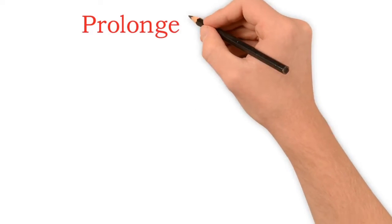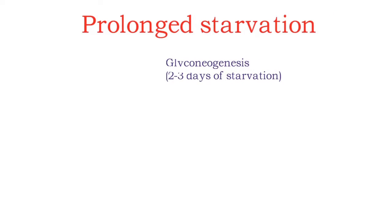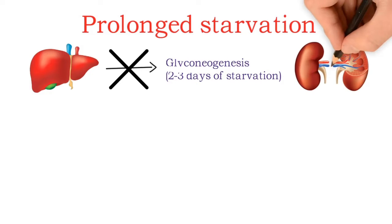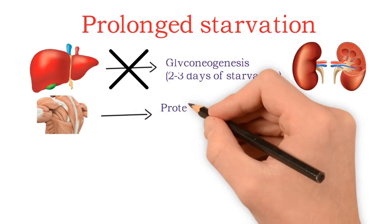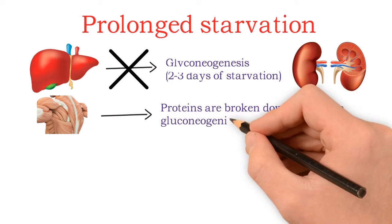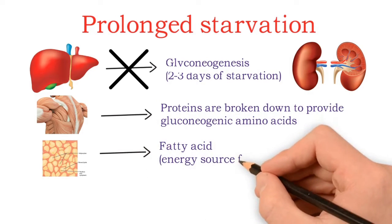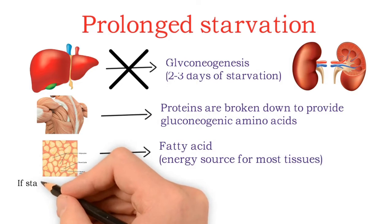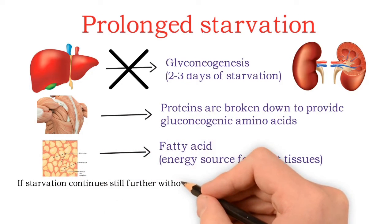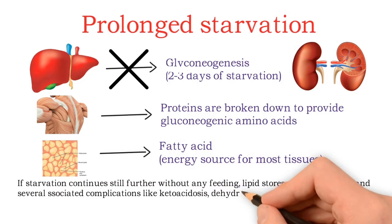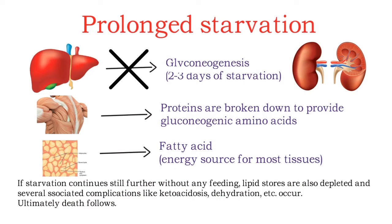In prolonged starvation, if starvation continues beyond 2 to 3 days and extends into weeks, hepatic gluconeogenesis decreases and kidney gluconeogenesis becomes more significant. Proteins in muscle are broken down to provide gluconeogenic amino acids. Fats are the energy source for most tissues. If starvation continues further without any feeding, lipid stores are also depleted and several complications like ketoacidosis and dehydration occur, ultimately leading to death.